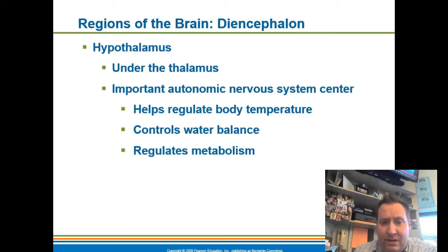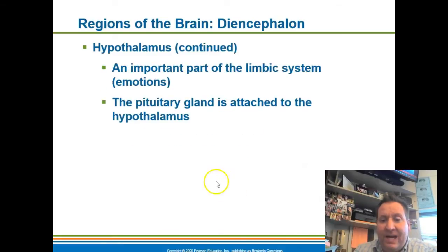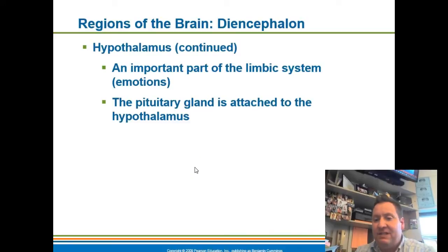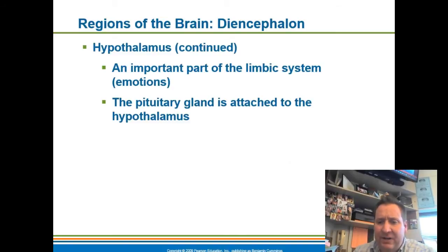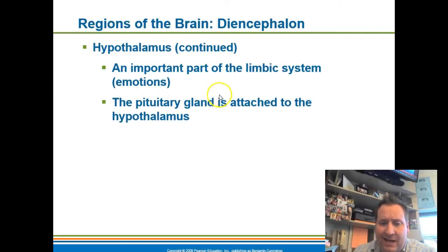The hypothalamus also regulates body temperature and is important to the limbic system. The limbic system is an important part of your emotional control center — controlling things like sexual desires, thirst, hunger, happiness, sadness, and depression. The pituitary gland is attached to the hypothalamus itself.